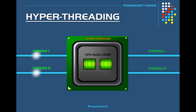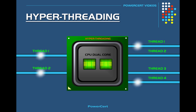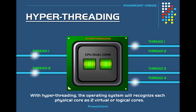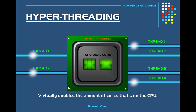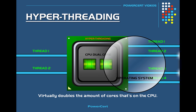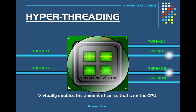If hyper-threading technology is added to this CPU, for each physical core on the CPU, the operating system will recognize each physical core as two virtual or logical cores. So basically, hyper-threading virtually doubles the amount of cores on the CPU. This dual core processor will be recognized as having four cores through the lens of the operating system.